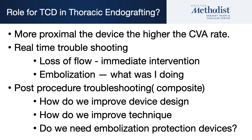So why is this of value in thoracic endografting and percutaneous aortic valve placement? Because the more proximal the device is placed, the higher the CVA rate. It allows you to do real-time troubleshooting — if you suddenly lose all flow, you've got an embolus in the middle cerebral artery and you immediately go to salvage. When you look at an embolization event, it lets you analyze the procedure: this is what I was doing and this is when the embolization occurred. It helps you troubleshoot for future cases and informs whether we need embolization protection devices.